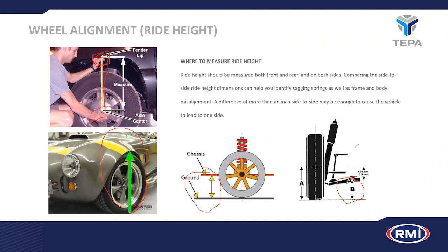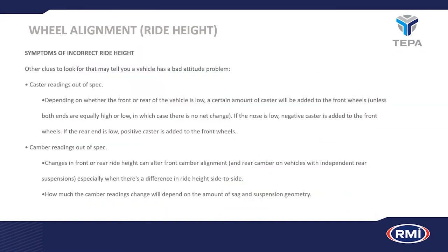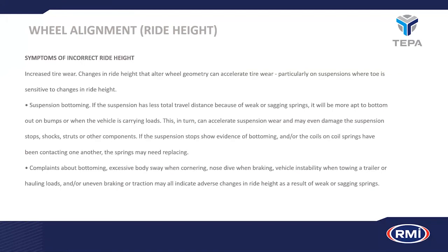These measurements are given by different manufacturers in different contexts. When looking at ride height specifications, it's important to understand which measurement the manufacturer requires, because that determines whether you get the ride height setting correct. Symptoms of incorrect ride height include caster readings out of spec, camber readings out of spec, and how the vehicle moves up and down — especially if springs are more compressed due to sagging or being broken.